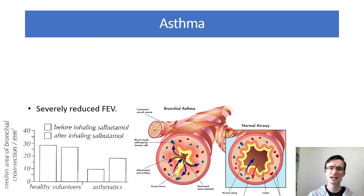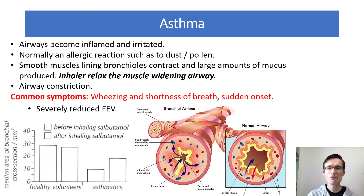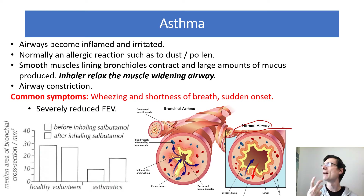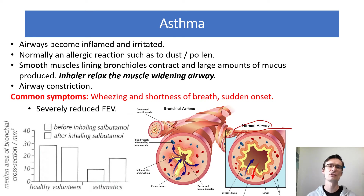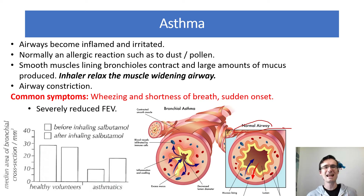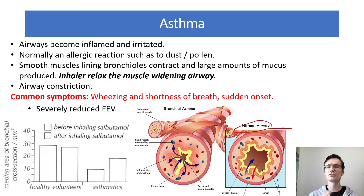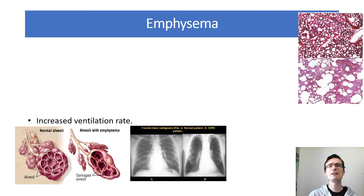Asthma is much more common and is effectively an allergic reaction where the airways become inflamed. A normal airway has space for air to get through the trachea and bronchioles, but during an asthma attack the muscle tissue becomes inflamed, reducing the lumen space so air can't get through. It's normally triggered by allergens such as dust and pollen. Smooth muscle contracts, large amounts of mucus are produced, and an inhaler relaxes those muscles to allow air in. Common symptoms are wheezing and shortness of breath, with a sudden onset that severely reduces FEV.